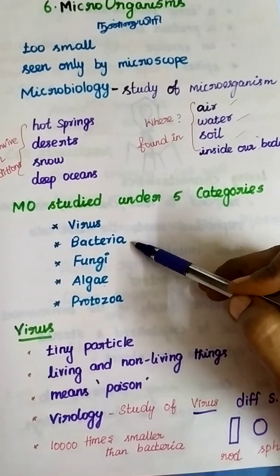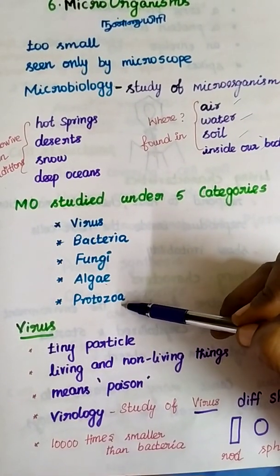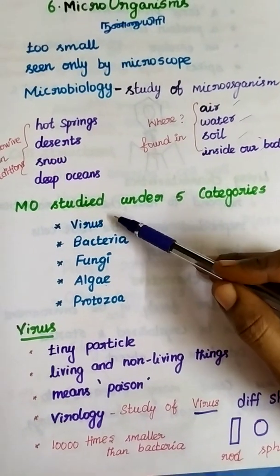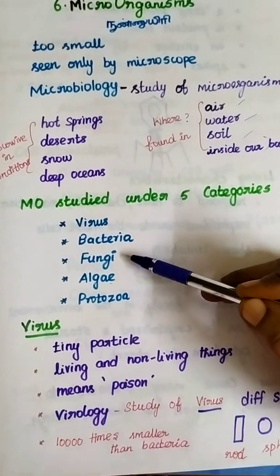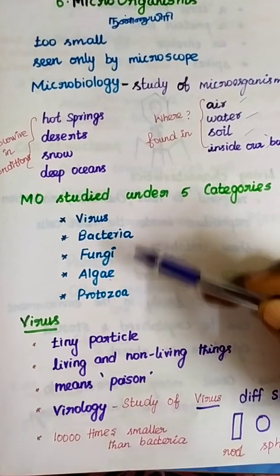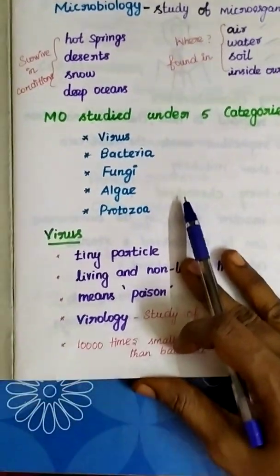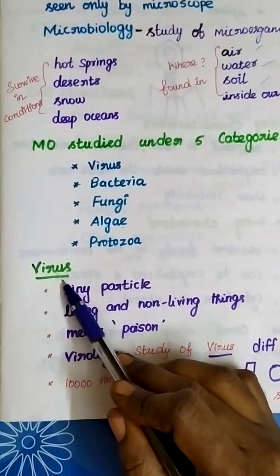The five categories are: virus, bacteria, fungi, algae, and protozoa. First, we will look at the virus.